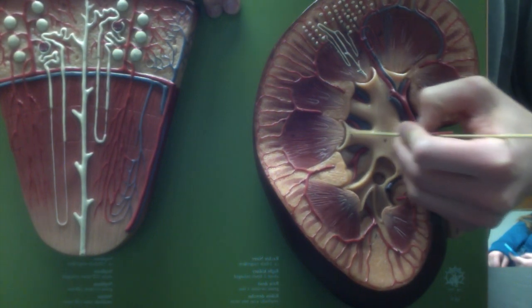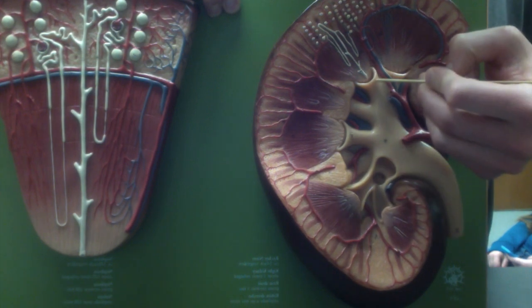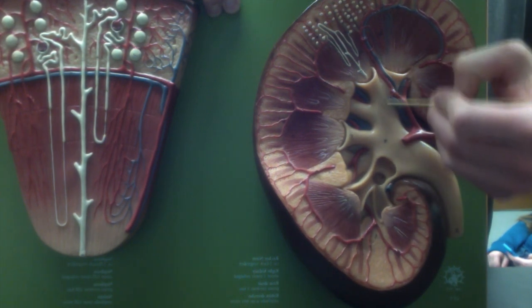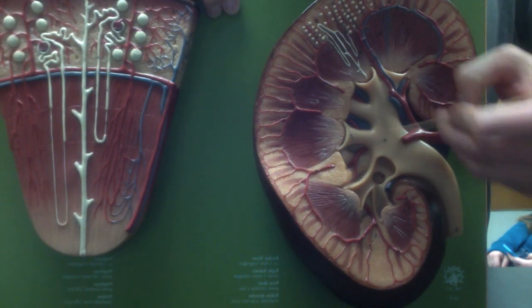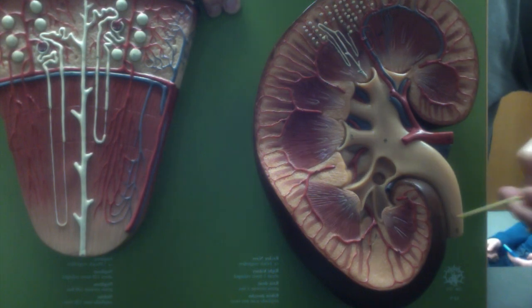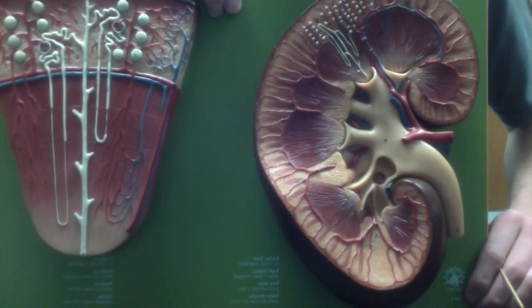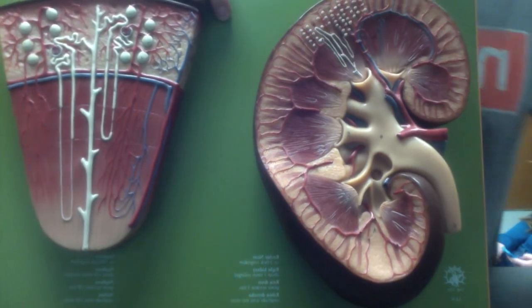The pyramids terminate into the renal papilla. From there, the papilla is going to have urine draining into the minor calyxes, which join together and form major calyxes. These drain into the renal pelvis and finally out the ureters.